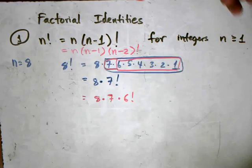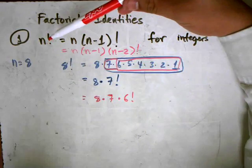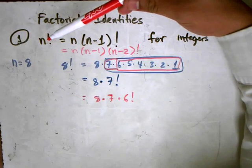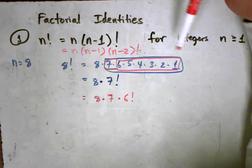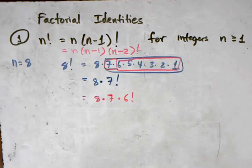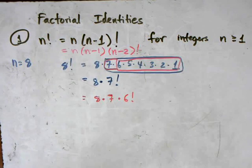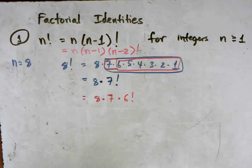So we can continue to subtract 1 from the number that's being factorialed, and continue the pattern on and on until we reach 1. And that's one of the very basic factorial identities.